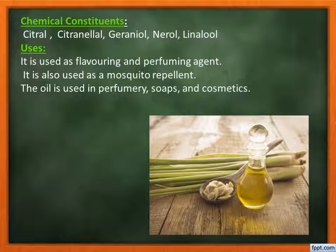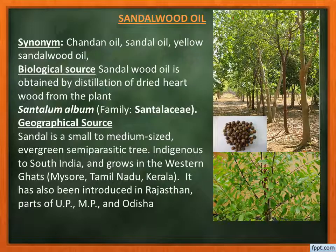Sandalwood oil, synonyms: chandan oil, sandal oil, yellow sandalwood oil. Biological source: sandalwood oil is obtained by distillation of the dried heartwood from the plant Santalum album, family Santalaceae. Geographical source: it is a small to medium-sized evergreen semi-parasitic tree indigenous to South India, growing in the Western Ghats. It has also been introduced in Rajasthan and many parts of Uttar Pradesh, Madhya Pradesh, and Odisha.